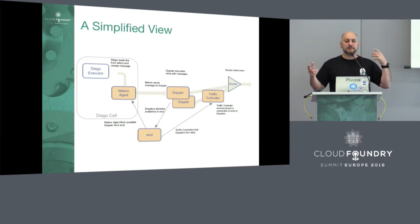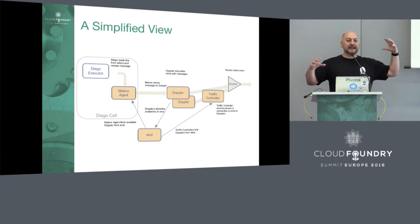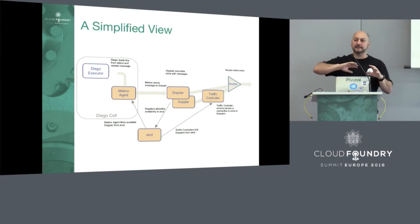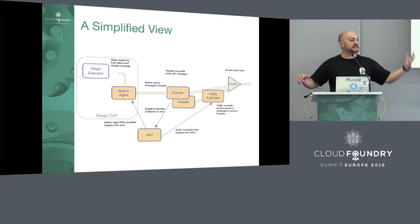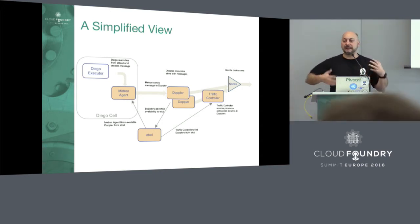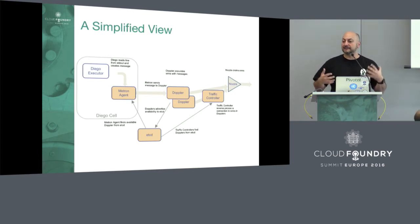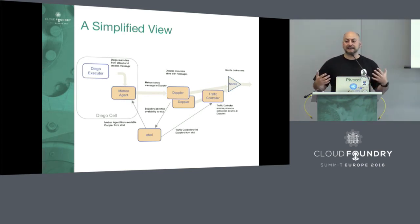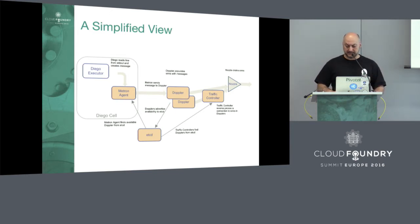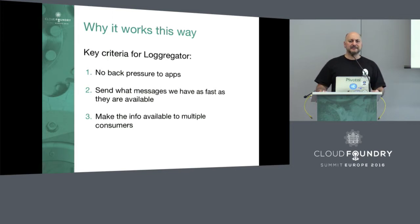That's an important concept to understand, because what we're trying to do when we talk about tuning is right-sizing that flow of information — basically egressing the data out of the system as fast as you're inputting it, or finding that right balance. You can obviously over-provision on one side or the other, but that's where you really run into problems and you get what we call log loss.